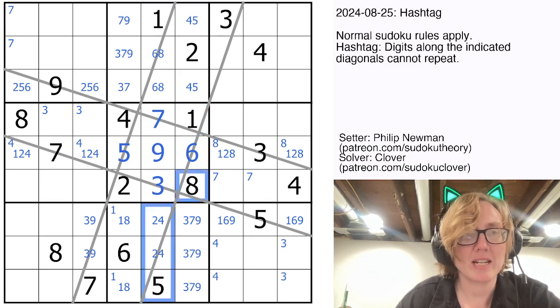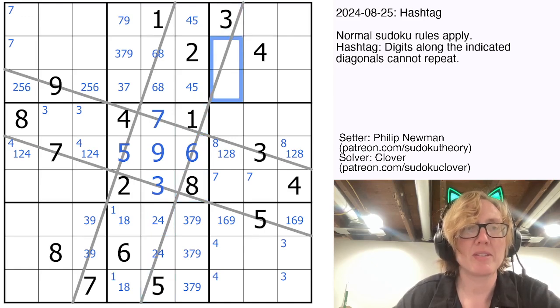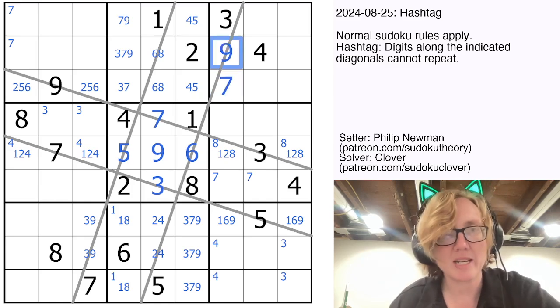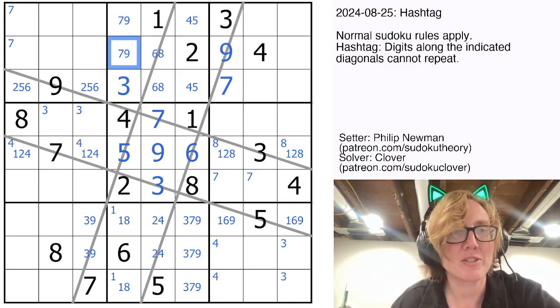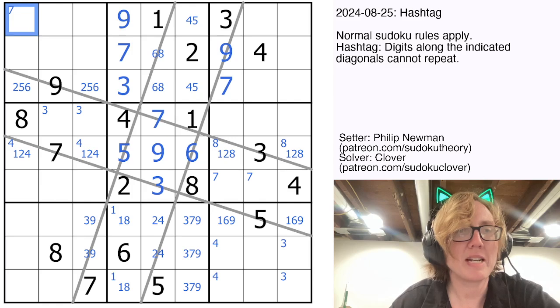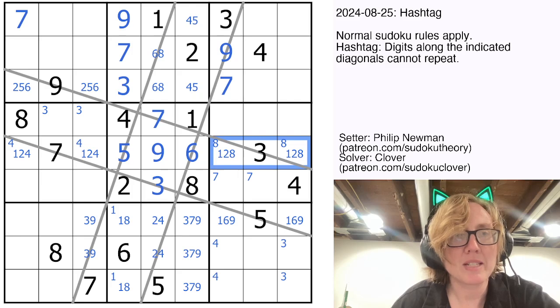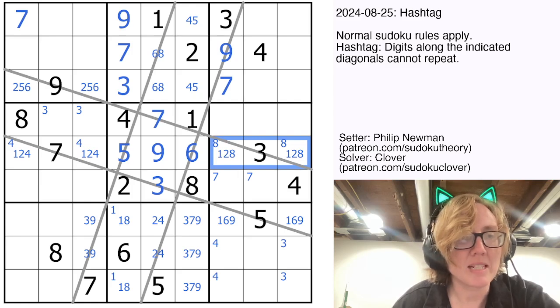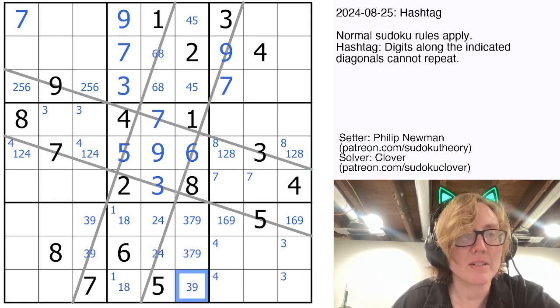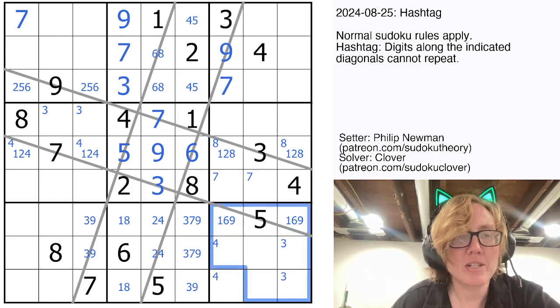We'll finish off this hashtag line now. So we have 2, 4, 6, and 8. We have 1 and 5, and we have 3. So we still need 7 and 9, which will go in those two positions, and we can finish this. And that rules out a 7 from here. So we can now place a 7. Now, okay. Can we get anything going kind of horizontally here? I kind of don't think so. That's not going to be a 7. Ah, okay.